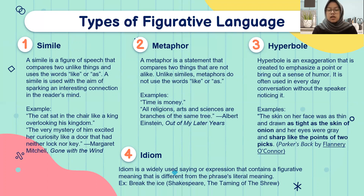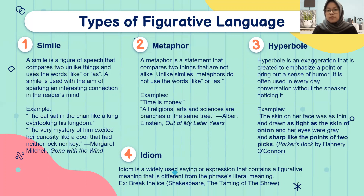The second type is metaphor — a statement that compares two things that are not alike, but without using 'like' or 'as.' For example: 'Time is money,' or 'All religions, art, and science are branches of the same tree.' So religion, art, and science are portrayed as roots of the same tree.